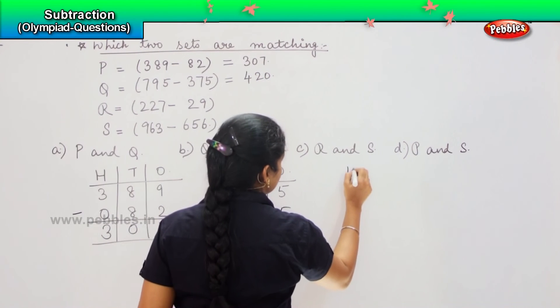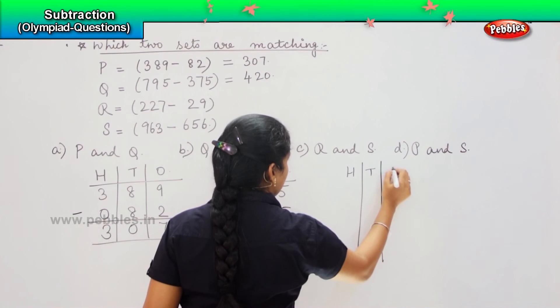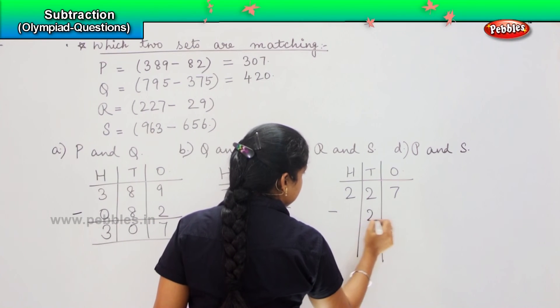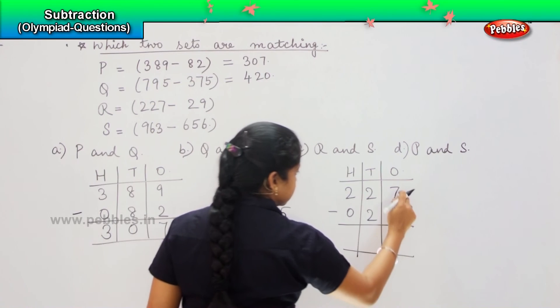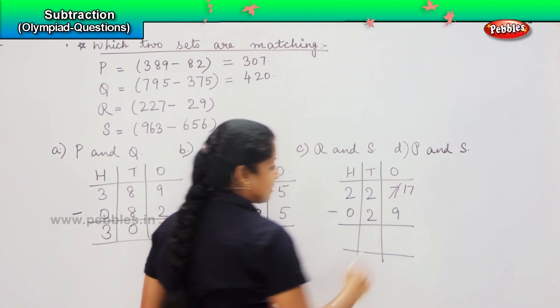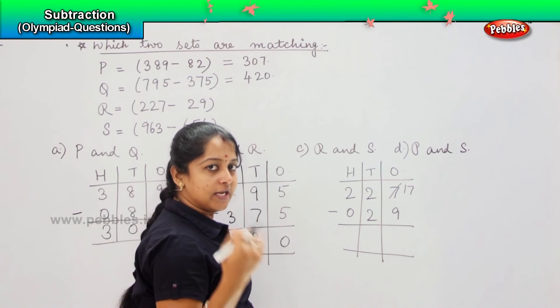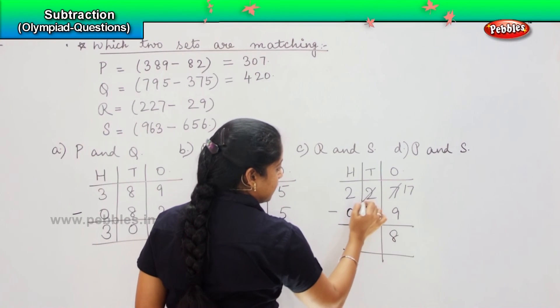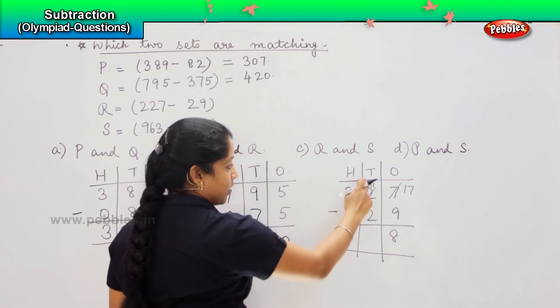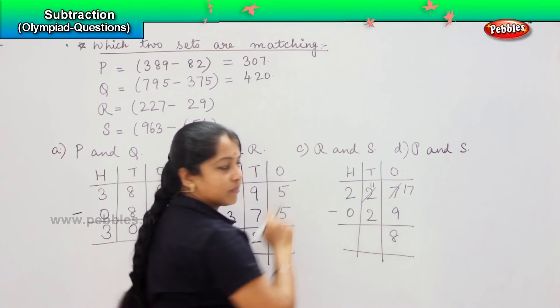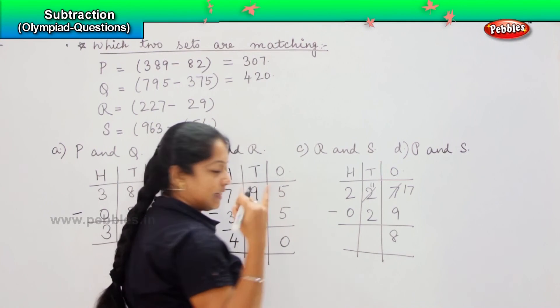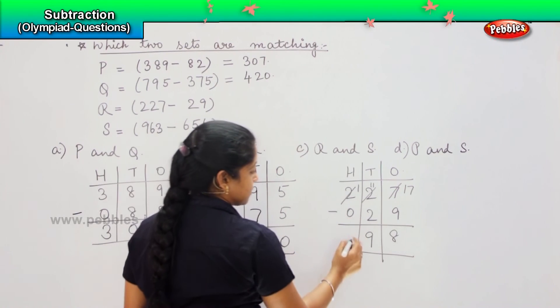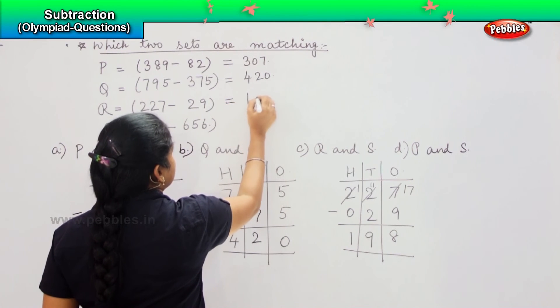Coming to the next one, H, T, O. It is 227 minus 29, so it will be 0 here. Since 7 is lesser than 9, we need to borrow. It becomes 17. So 17 minus 9 is 8. It becomes 2 here. Since it is borrowed, it will become 1. And you cannot subtract 1 from 2, so again it has borrowed from 100. So it becomes 11. 11 minus 2 is 9. And since it has given 1 to the tens column, it becomes 1. So 1 minus 0 is 1. So this becomes 198.